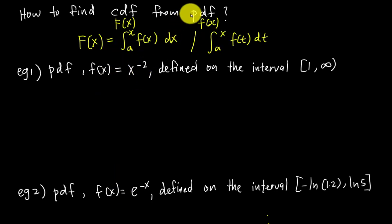The PDF is x^(-2) defined on the interval [1, ∞). If you've learned about probability density functions, you should know that when you integrate the PDF over this interval, you get an area of 1. That's how we define a PDF.